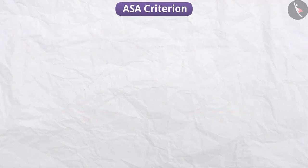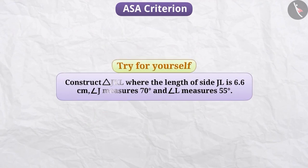Now you can construct triangle JKL yourself, where the length of side JL is 6.6 cm, angle J measures 70 degrees and angle L measures 55 degrees.